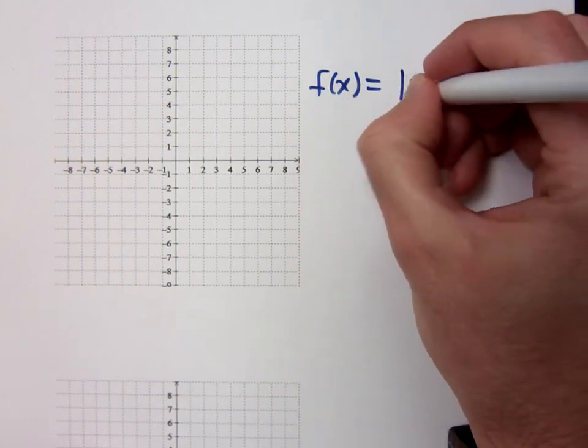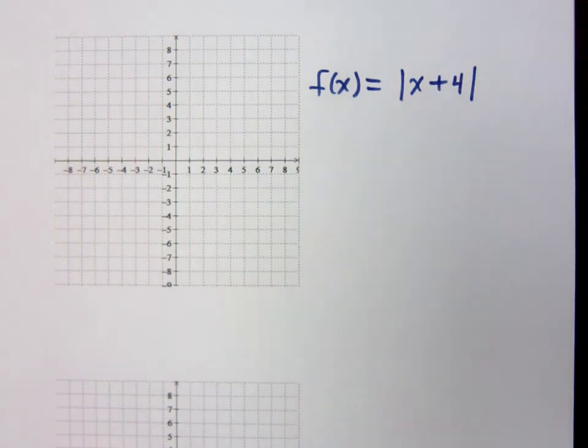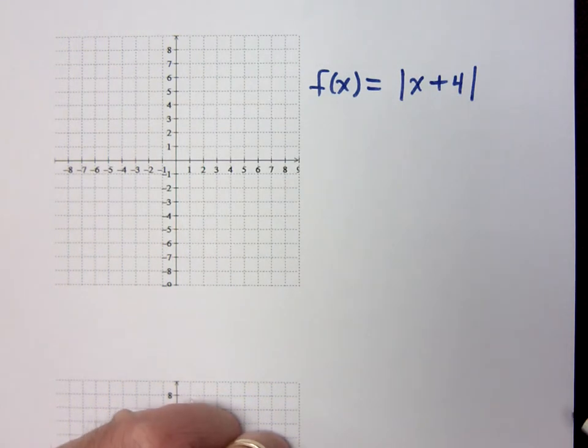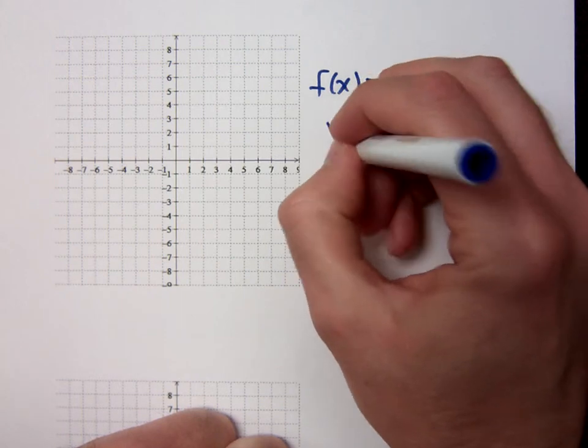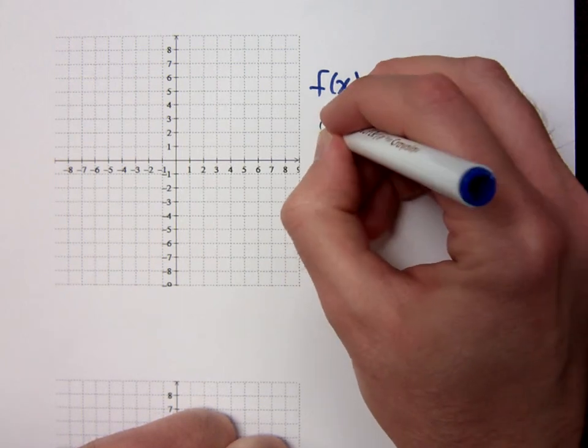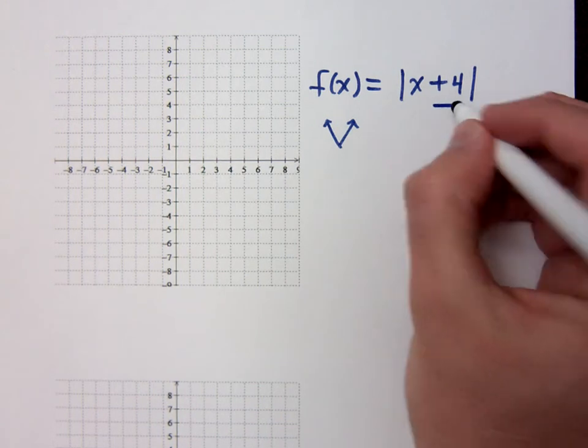If I look at the absolute value of the quantity x plus 4, the first thing that we should see here is absolute value. And the absolute value, when we're talking about graphing, has a v-shape. Do you all agree? Now what did we say about the plus 4 on the inside? What does that mean?